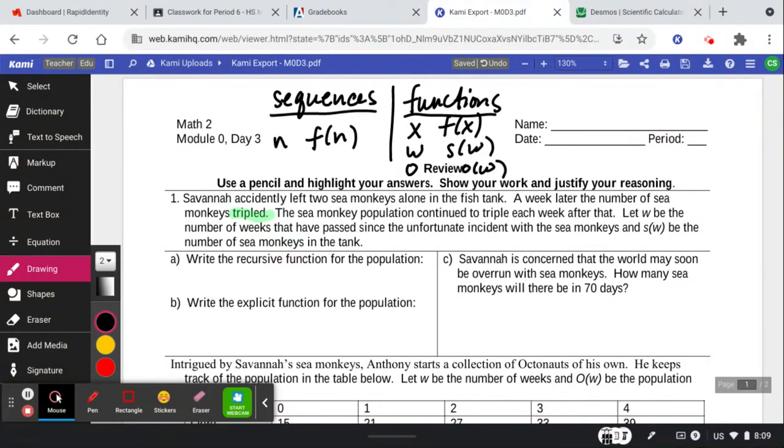So let's look at example one. Savannah accidentally left two sea monkeys alone in the fish tank. A week later, the number of sea monkeys tripled. So if they're talking about a week later, it means that over here, this is like time zero.